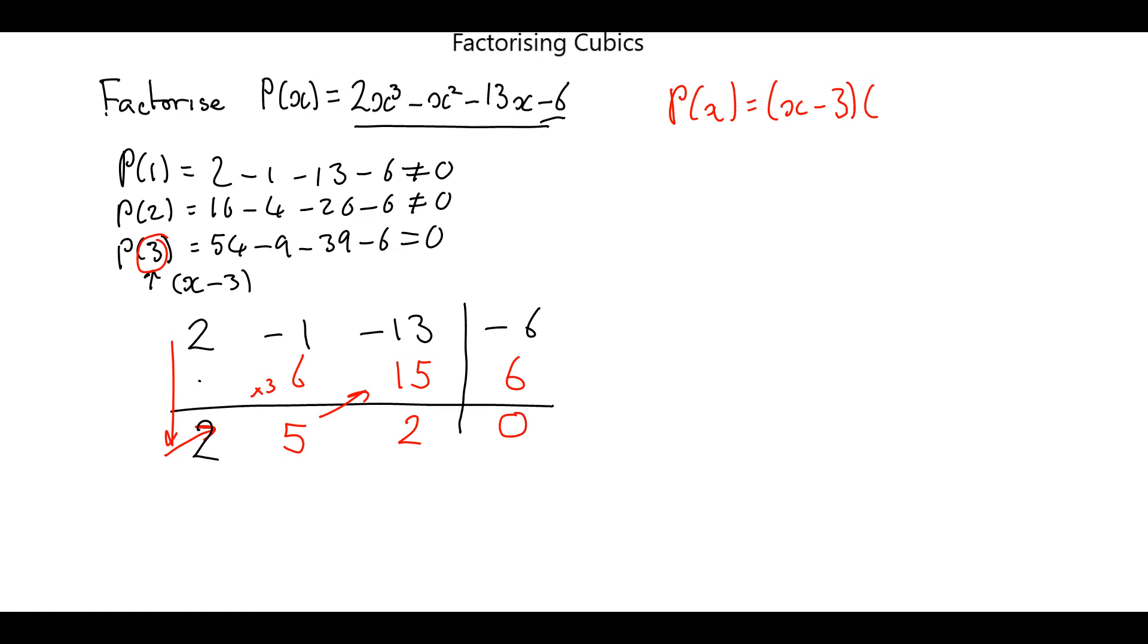And the remaining parts is going to be 2X squared—that 2 coming from over here—plus 5X, the 5 coming from over here, plus 2. So now what we're going to do is going to factorize this in the normal way.